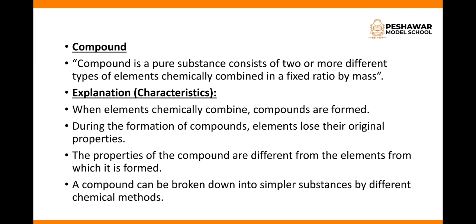A compound is a pure substance that consists of two or more different types of elements chemically combined in a fixed ratio by mass. Compound हमारे पास pure substance है जो दो या दो से ज्यादा elements से मिलके बनता है। Number 1: ये chemically combined होगा। Number 2: इसमें ratio fix होगी।